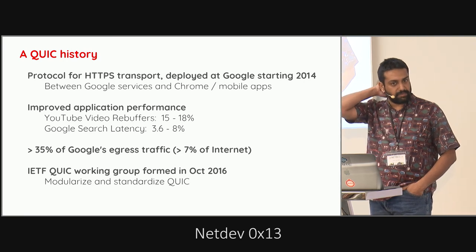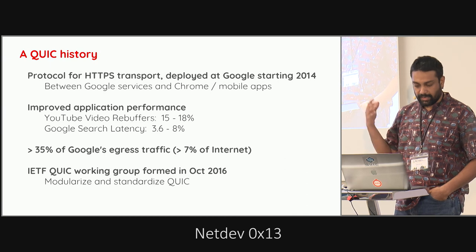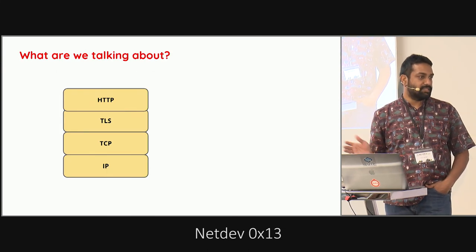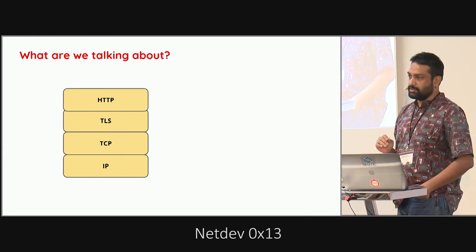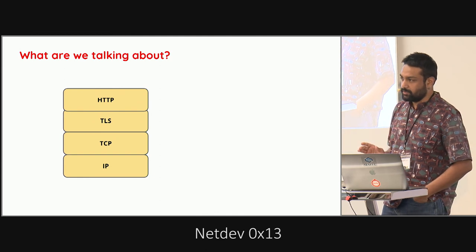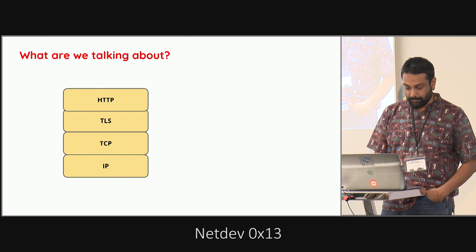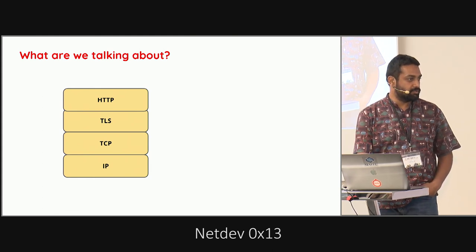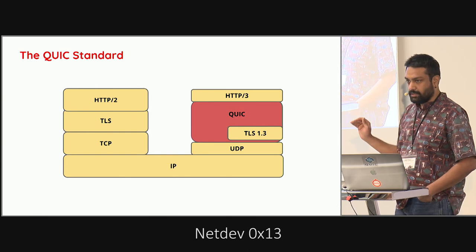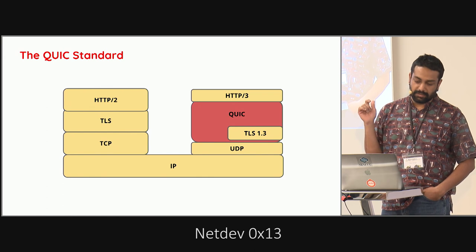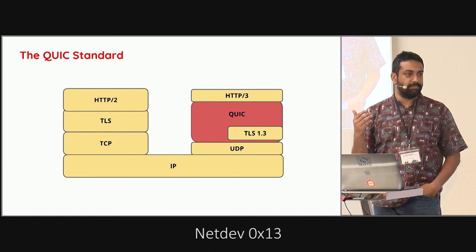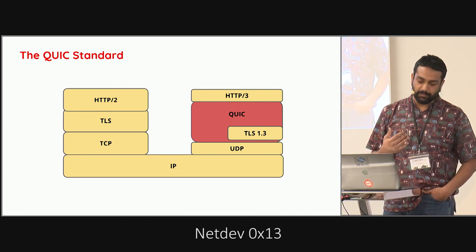Since then, we formed an IETF working group to modularize and standardize much of QUIC. Going back to basics: that's our traditional well-understood HTTPS stack that half of this room tries to optimize TCP for. What is TCP being used for if not HTTPS? Practically nothing else. What QUIC does is effectively replace a big chunk of that stack — it replaces TCP entirely, and it encapsulates TLS in an interesting way. It also replaces a whole bunch of what HTTP/2 provided, subsuming a lot of that functionality.